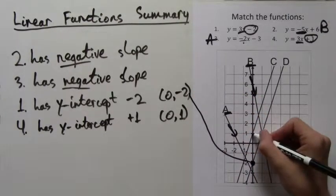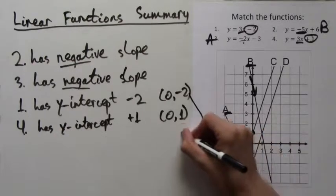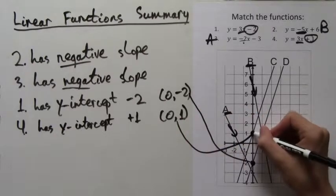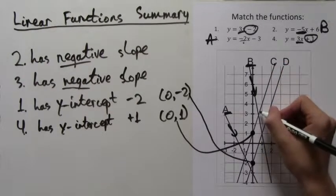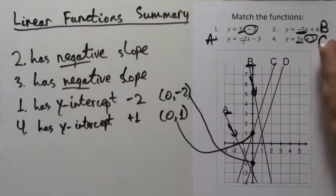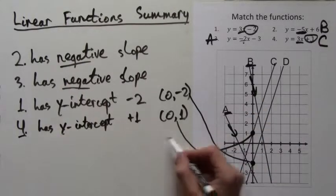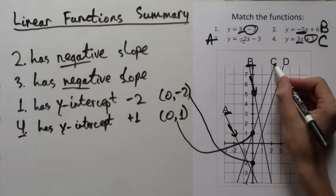And here is (0, 1), 1 above the origin. (0, 1) lies on line C, and it also should lie on the line with formula number 4. So the answer to 4 is C.